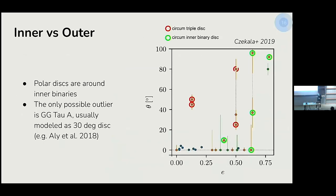Going back to the mutual inclination versus eccentricity plot from Czekala et al. 2019: if we mark with red circles the disks around the outer level of a hierarchical triple system and with green circles the disks around the inner level, we see that all the polarly aligned disks observed are around the inner level of these hierarchical systems. The only exception is the highest red circle, which refers to a system with two degenerate solutions for mutual inclination — one inclined and one mildly inclined — and the modeling preferred the mildly inclined configuration, again in agreement with our findings.